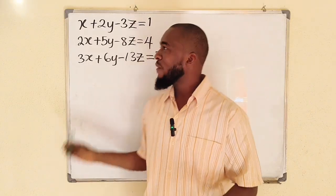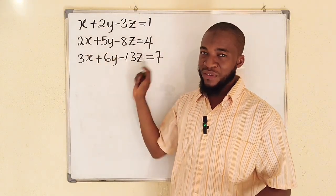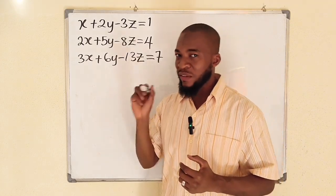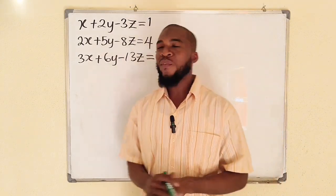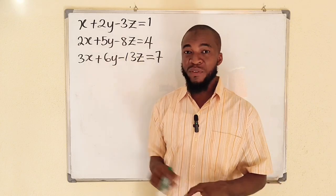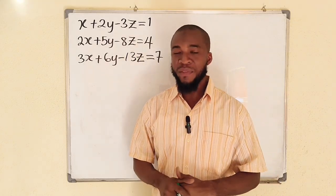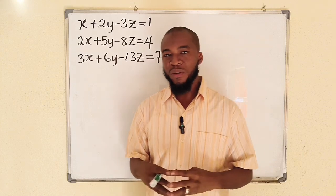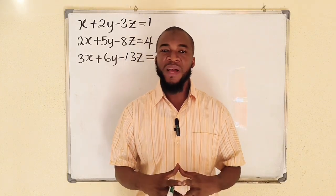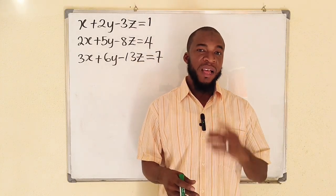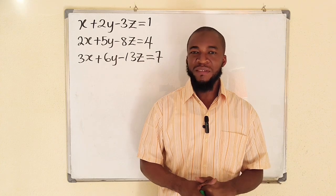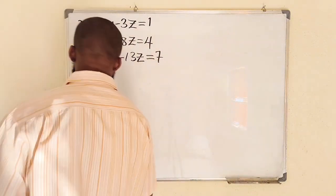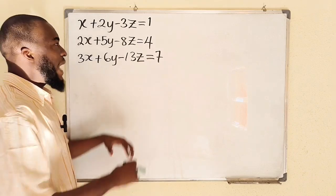Hello, dear viewers. We have a system of linear equations involving three unknown variables x, y, and z, and we are going to find a solution using the Gaussian elimination method. If you are new here, consider subscribing and press the bell icon so you will be notified whenever I upload content. Don't forget to share with your learning colleagues. Let's get started.